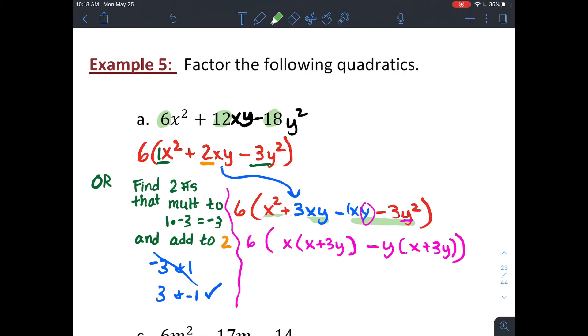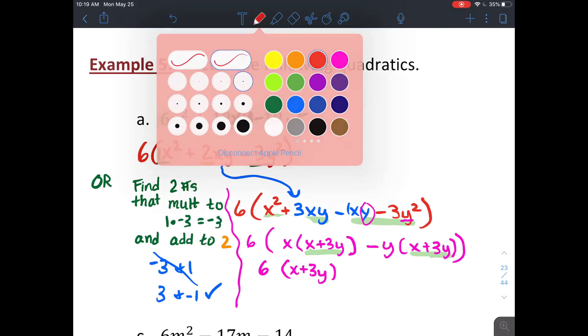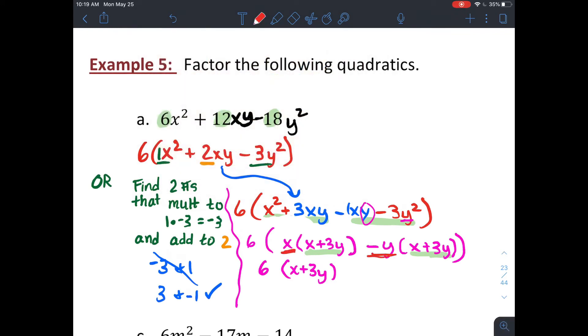Because then they share that common factor of x plus 3y. So my 6 has just still been chilling out in front, and it's still going to be there. So I'll have my x plus 3y times my left over terms of x minus y. And that's the same thing as I got by guessing and checking.